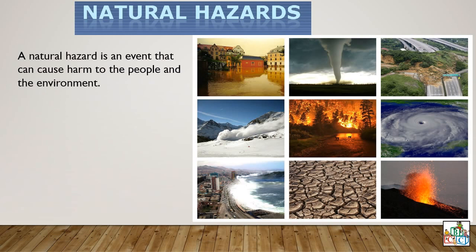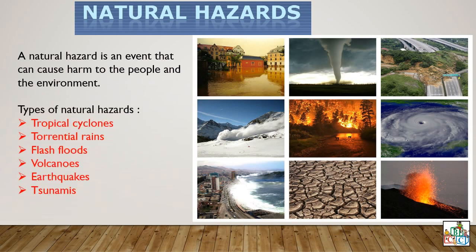We have taken a look at all these types of natural hazards in our book. These are all found in our book. The types of natural hazards are: tropical cyclones, torrential rains, flash floods, volcanoes, earthquakes and tsunamis. We are going to revise very briefly on all these types.